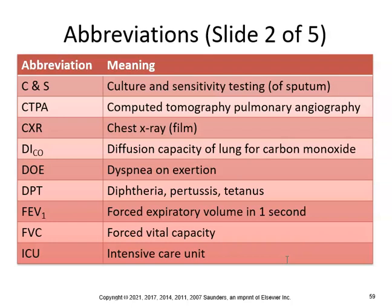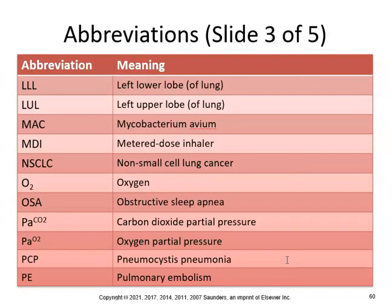DOA is dead on arrival, but DOE is dyspnea on exertion — difficulty breathing on exertion. People with asthma will have DOE; if you don't get treatment in time, then you can get DOA. DPT is diphtheria, pertussis, and tetanus — hopefully you had that shot. FEV is forced expiratory volume in one second; FVC is forced vital capacity; ICU is intensive care unit.